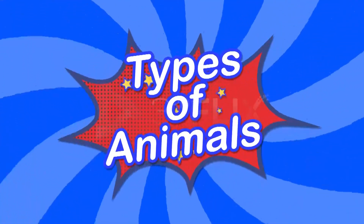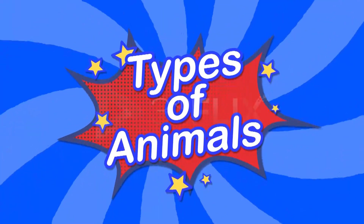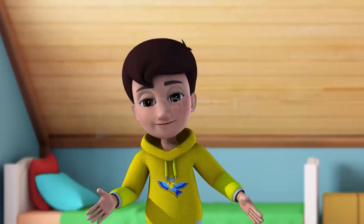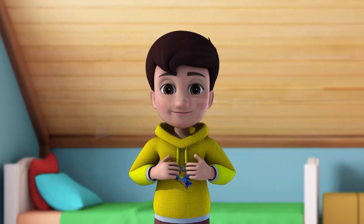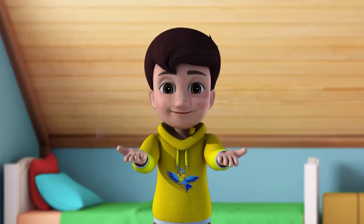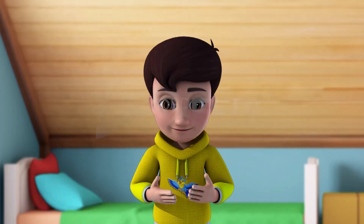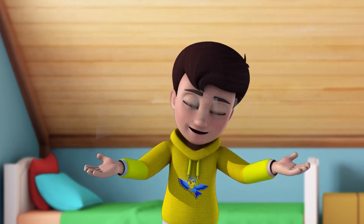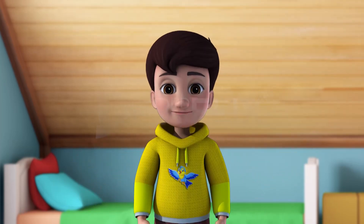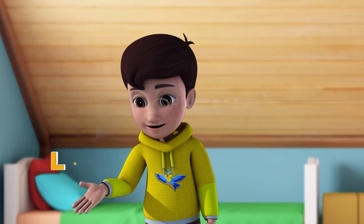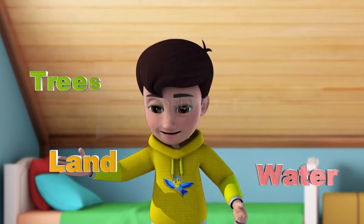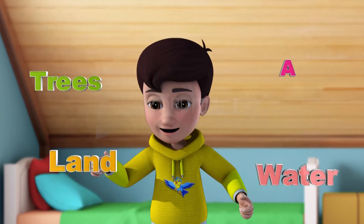Types of Animals. Plants and human beings depend on animals for their needs. We find animals everywhere on the planet. Different types of animals are seen on land, water, trees and air.